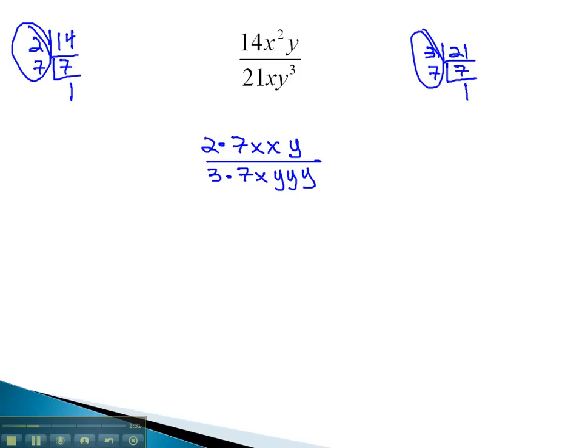This makes it easy to see our common factors of 7 in both the numerator and denominator. We also see there is one x in common and one y in common in both the numerator and denominator.